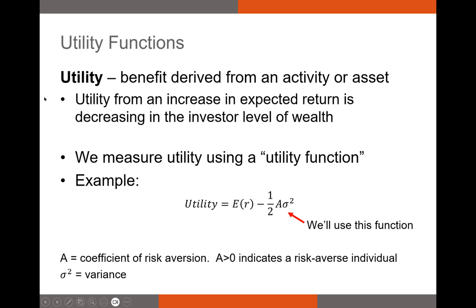Before I talk about the coefficient of risk aversion, I need to introduce — or hopefully refresh your memory on — utility. From your economics class, hopefully you remember the concept of utility. It's just the benefit that you derive from an activity or an asset. It's not necessarily the amount of money you get; it's the overall benefit that is very hard to quantify. Typically, if you get a higher return on some asset, that's going to increase your utility. If there's a lot of risk associated with that asset, that's going to decrease your utility.